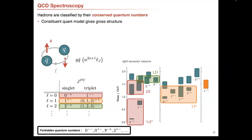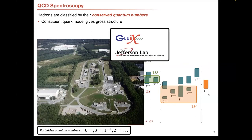We're led immediately to ask: can we do refinements of this? We notice that there are some forbidden quantum numbers you cannot construct with the simple quark model picture. One of them is 1 minus plus, which happens to be a particle that is observed in the light isovector spectrum. So right away, you're getting an observation of something that doesn't even fit this picture. This object, which has been observed by a few experiments, and some of its cousins are under intense search at Jefferson Lab through the GlueX experiment to look for exotic hadrons.